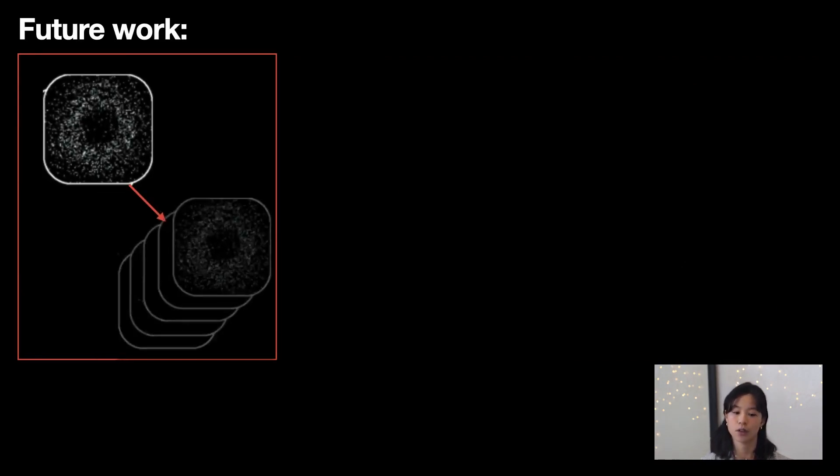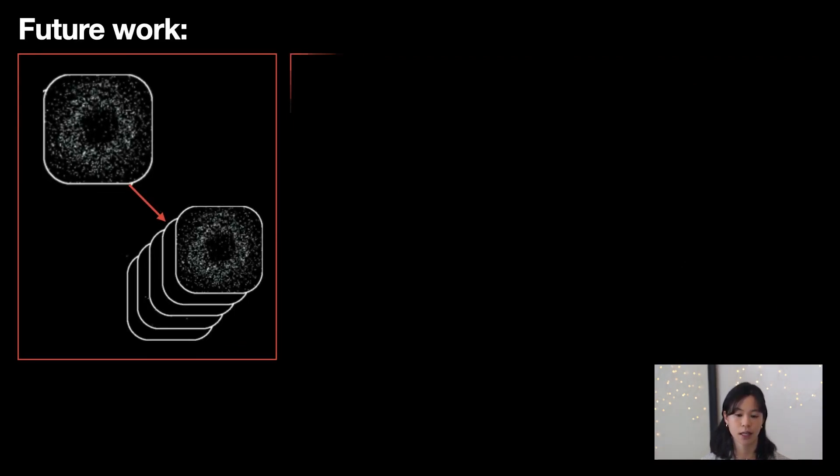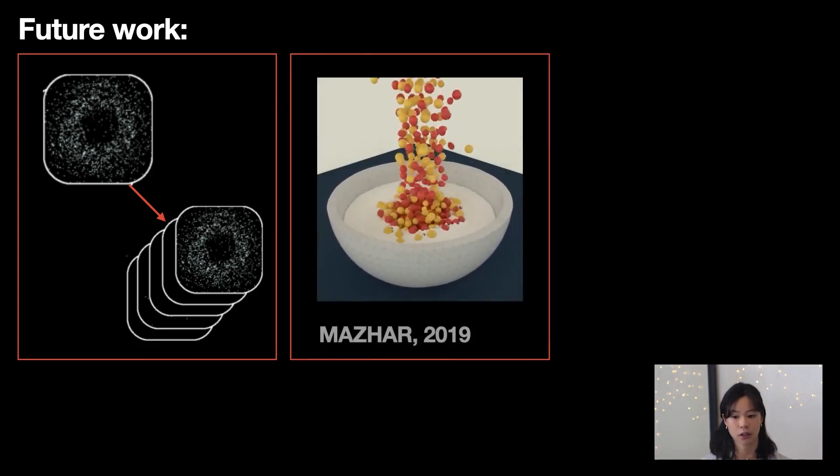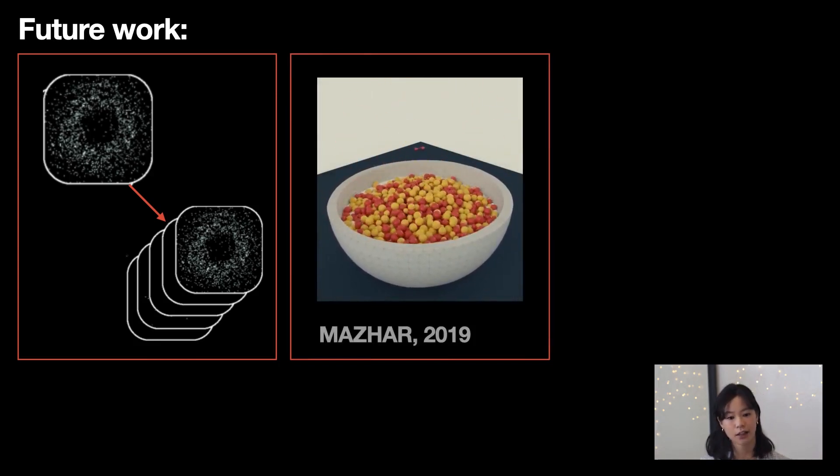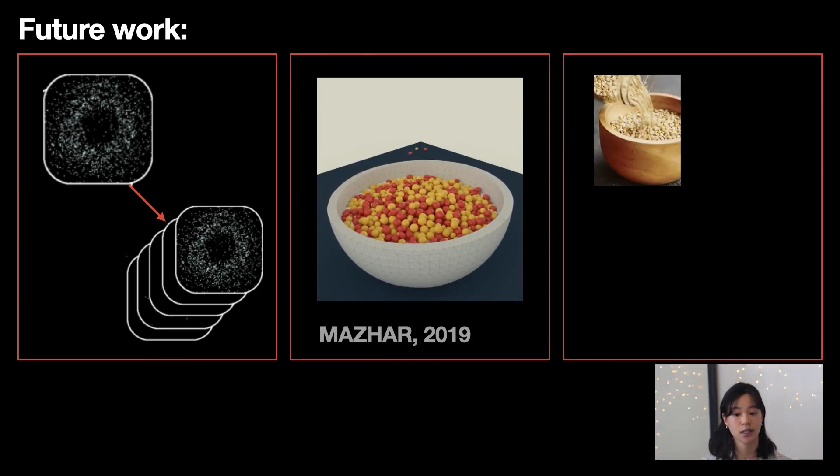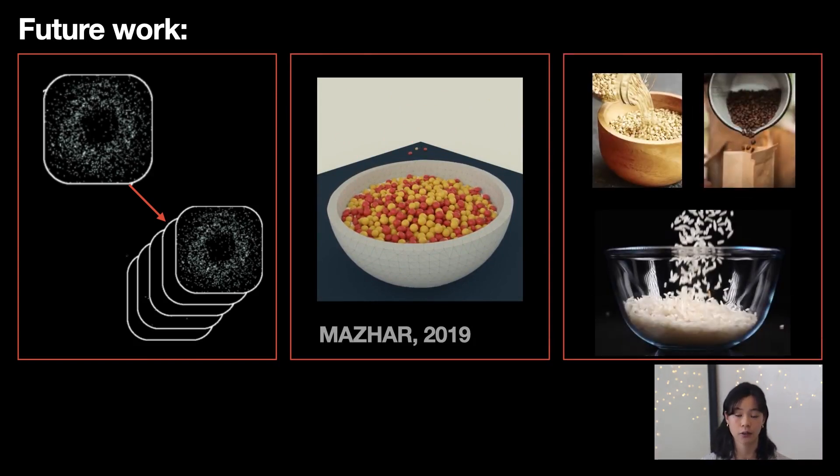Future directions for this work include replacing static image observations with temporal sequences of depth images and modeling cohesion to allow for liquid-solid interactions. Finally, more elaborate robotic manipulation tasks can be explored, such as pouring grains into and out of assorted containers.